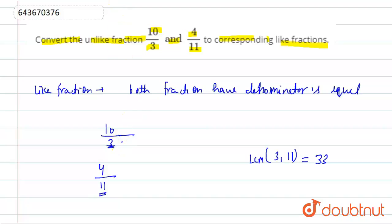We multiply by 11 in numerator and denominator, so this will be equal to 110/33. Now we will make 33 the denominator, so we multiply 3 in numerator and denominator, so this will be equal to 12/33.